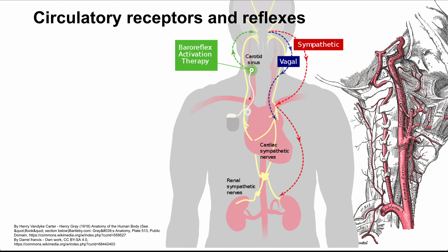Now, in general, when you have a receptor and a reflex, you're getting a signal from the body — for instance, in the carotid sinus. That signal will go to the central nervous system, which will then output another signal back to the body to some effector organ. That could be the heart, the blood vessels, or the kidney. So we'll see a kind of loop like this for many of the receptors that we'll talk about.